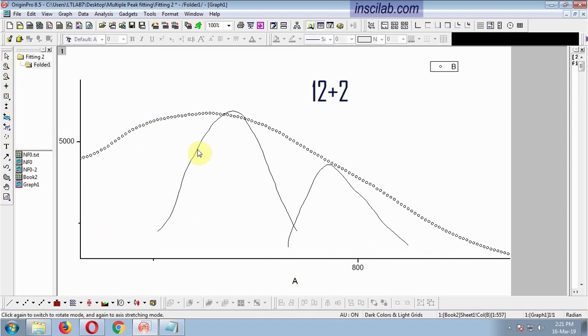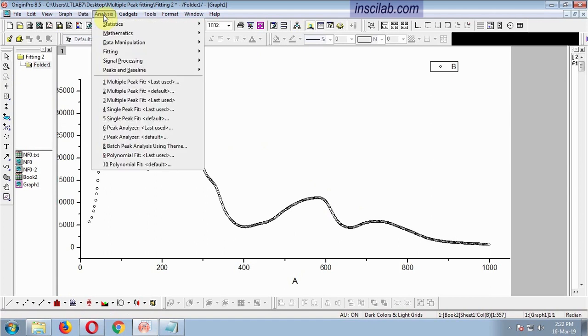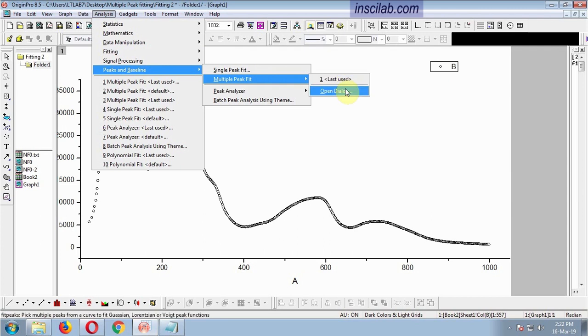If you are confused with the number, don't worry. Make a few trials between the minimum number of possible peaks and the maximum possible number of peaks. Start with the minimum number and follow the steps I am showing. Go to Analysis, Peaks and Baseline, Multiple peak fit, Open dialogue.